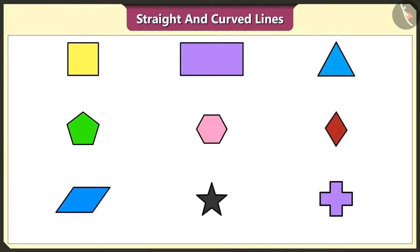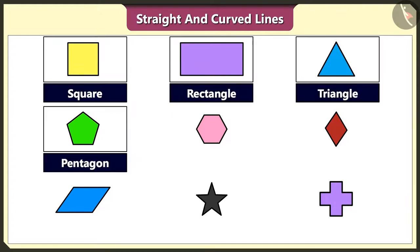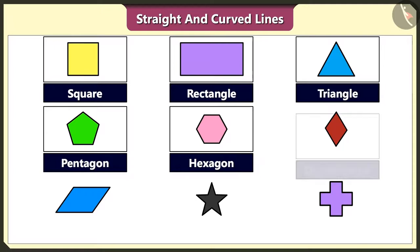Yes. And we can make square, rectangle, triangle, pentagon, hexagon, quadrilateral, rhombus, star and plus using straight lines.